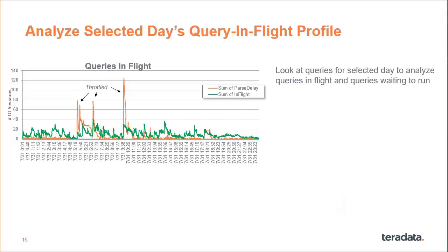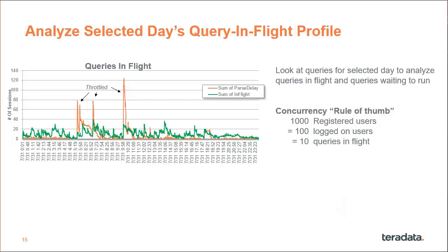Then you want to look at the queries-in-flight profile. The concurrency rule of thumb is that if you've got 1,000 registered users, you'll have 100 logged-on users at any one point in time, and that will result in 10 queries in flight. The 100 logged-on users are formulating reports, looking at results, drinking coffee, making phone calls, and doing other things — so the fact they're logged on does not mean they're all firing queries. I've had cases where the customer said they have 1,000 users and want to run 1,000 concurrent queries, and that's not likely to be a realistic workload.